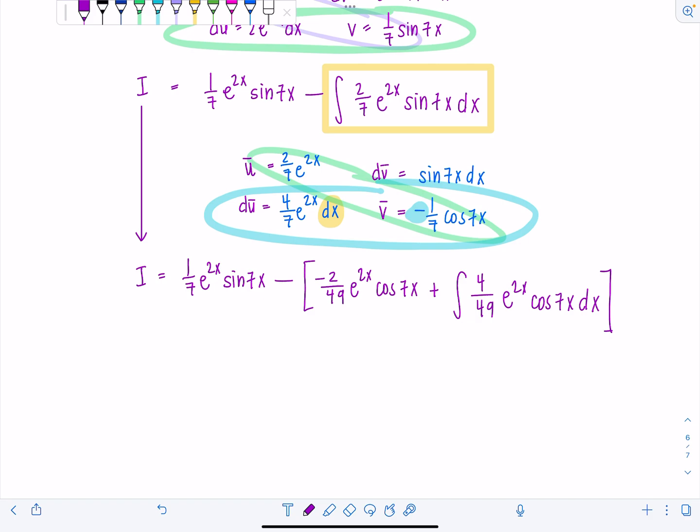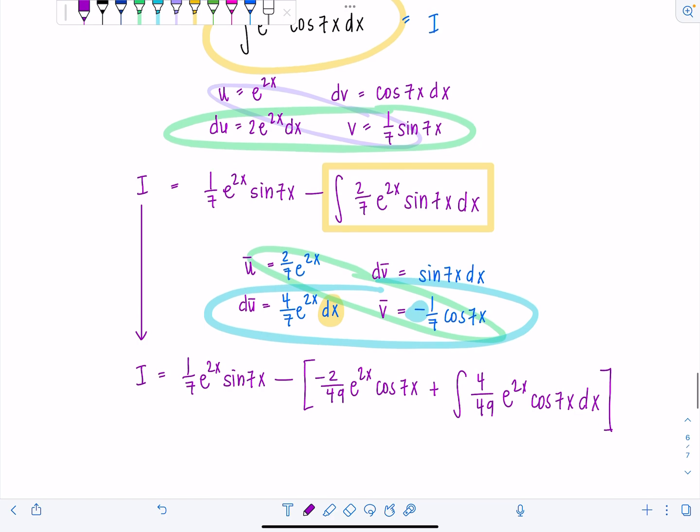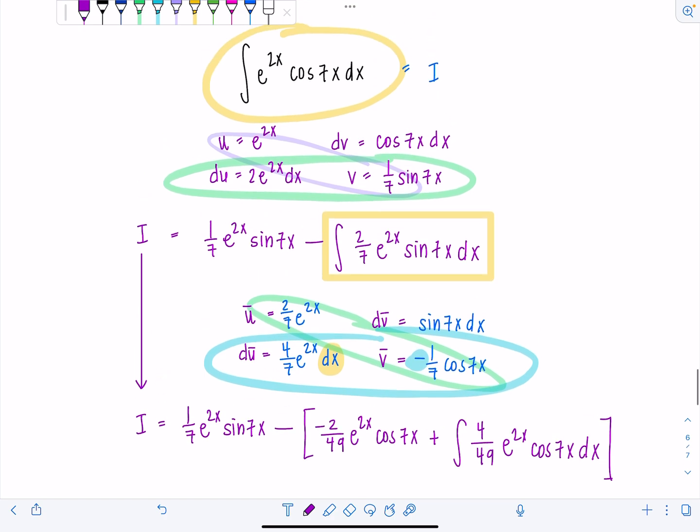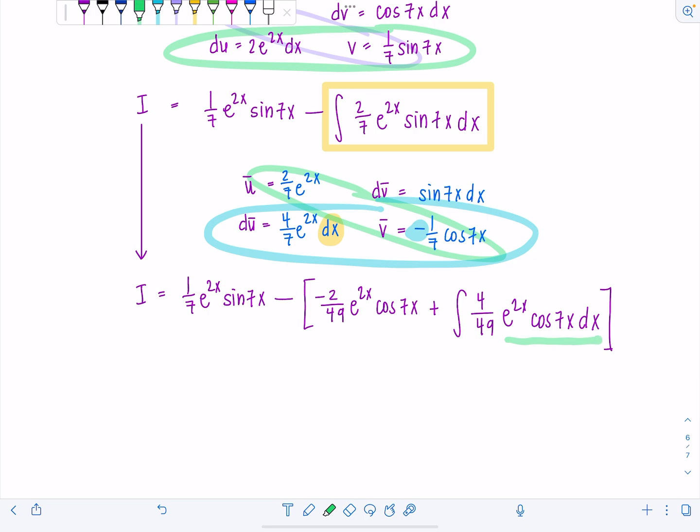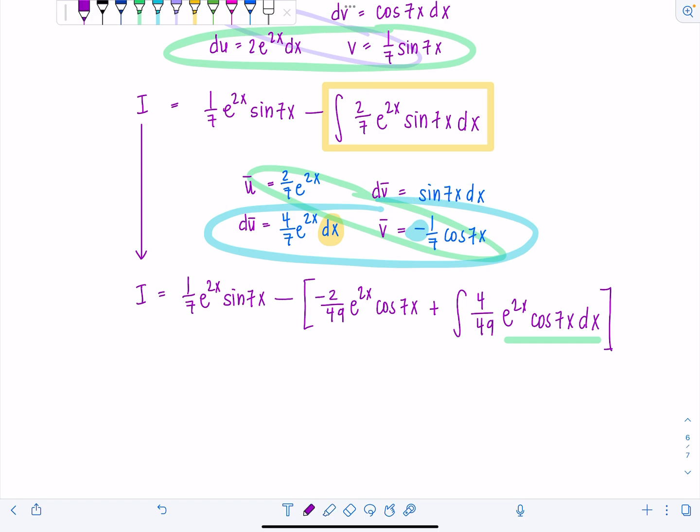Do you recognize anything? This integral that I called I, e to the 2x times cosine 7x dx. Here it is again. That's why I call these boomerangers, because the original integral pops back up after multiple rounds of integration by parts. So let's clean things up and then we're pretty much ready to roll.